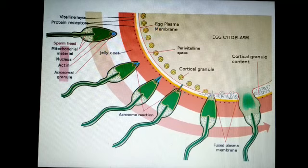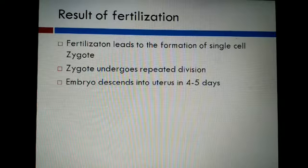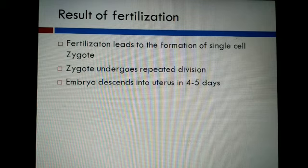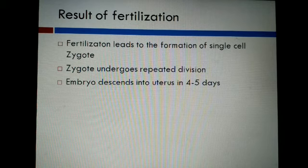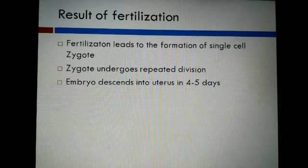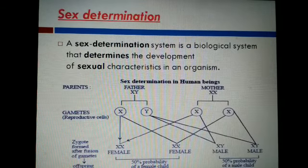The fusion of the haploid nuclei forms a diploid zygote. The result of fertilization is the formation of a single-cell zygote. The zygote undergoes repeated mitosis divisions — mitosis because the zygote is diploid — and the embryo descends into the uterus in four to five days. In my next video, we will discuss implantation.